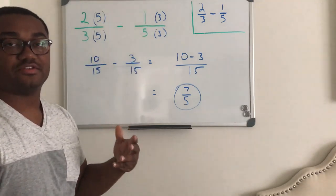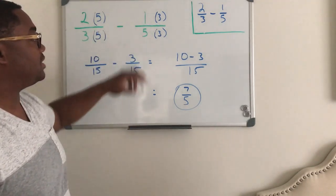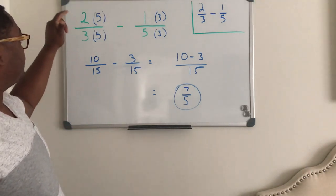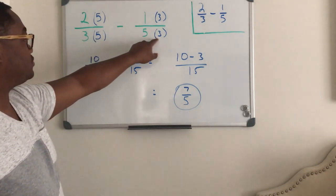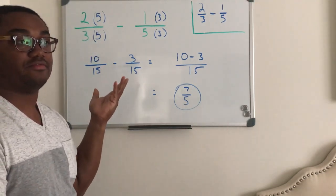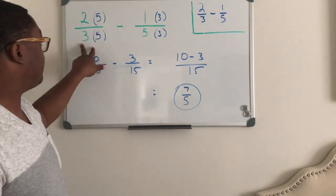What happens is you're multiplying two-thirds times five over five, and you're multiplying one-fifth times three over three, so this is like two-thirds times one, and one-fifth times one, so that you don't want to change the value of each fraction. And so you can actually get an accurate answer, right?